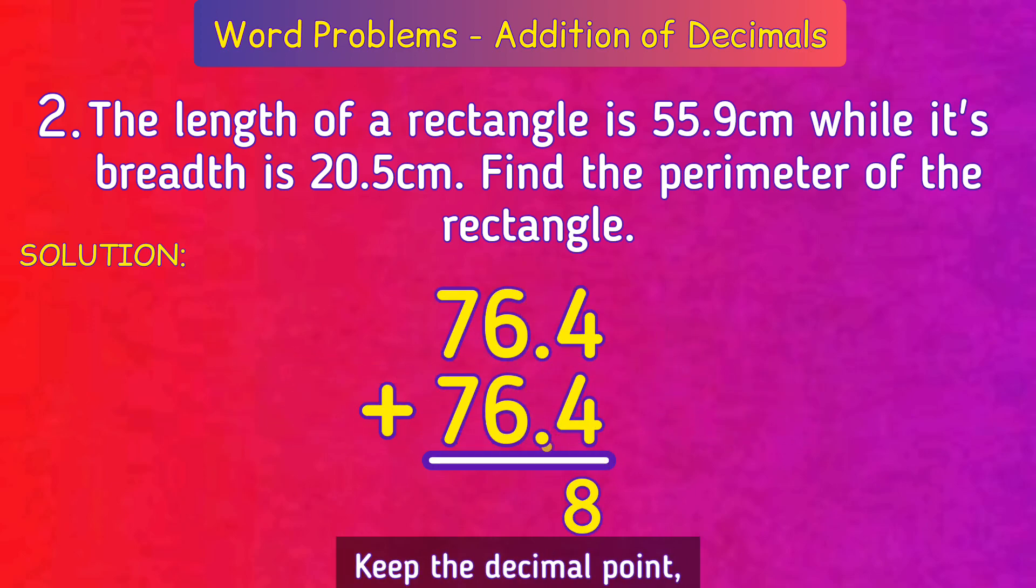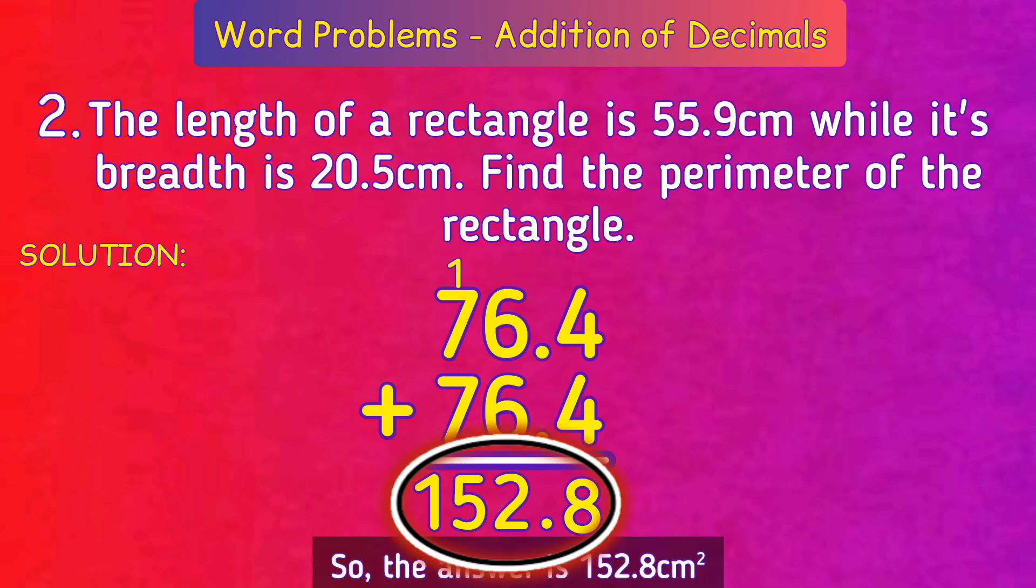So keep the position. 4 plus 4 is equal to 8. Keep the decimal point. 6 plus 6 is equal to 12, keep 2 and 1 on top of 7. 1 plus 7 plus 7 is equal to 15. So the answer is 152.8 centimeters.